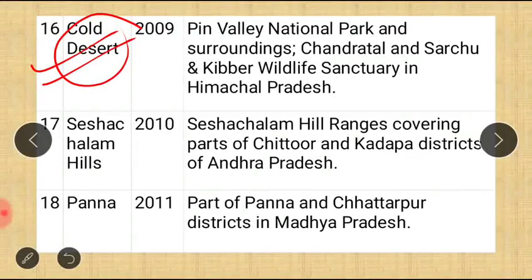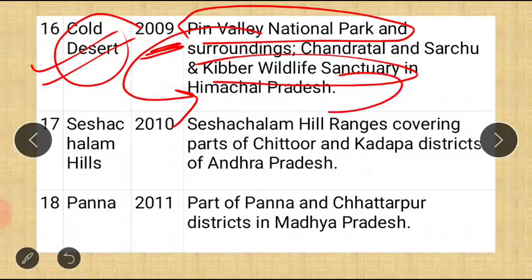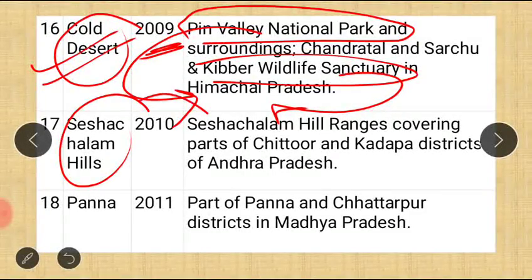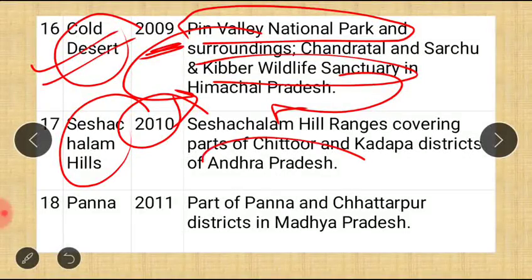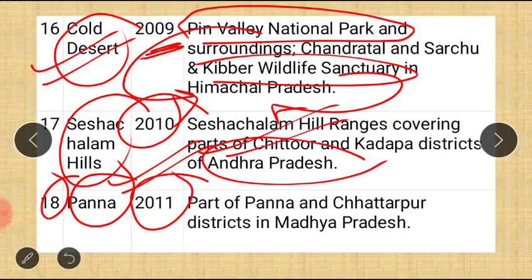The fifteenth is Kutch (Cold Desert), 2008, covering parts of Kutch, Rajkot, Surendranagar, Patan, and Surendranagar Civil Districts of Gujarat — this is a cold desert biosphere reserve. The sixteenth, seventeenth biosphere reserves to remember: in 2009, Pin Valley National Park and Kibber Wildlife Sanctuary in Himachal Pradesh are all covered under the Cold Desert Biosphere Reserve. The seventeenth is Sheshachalam, 2010, covering Sheshachalam Hill Range in parts of Chittoor and Kadapa Districts of Andhra Pradesh. The eighteenth and latest addition is Panna, 2011, part of Panna and Chhatarpur Districts of Madhya Pradesh.